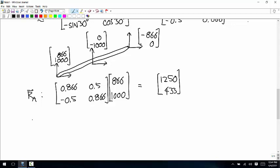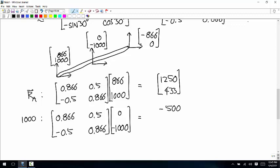Then that middle force, that external force of 1,000, we're going to multiply the same rotation matrix times this vector 0, negative 1,000. And you get negative 500, negative 866.